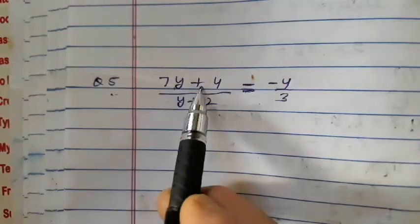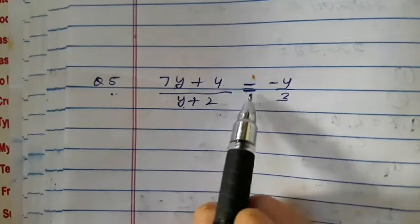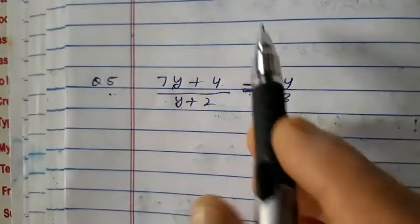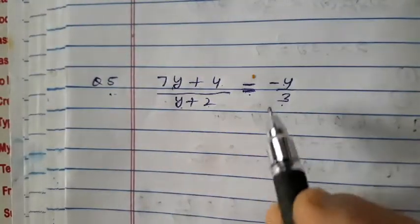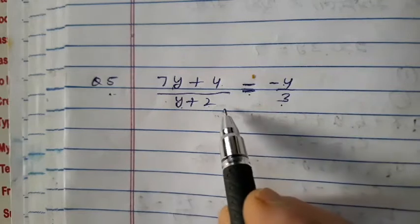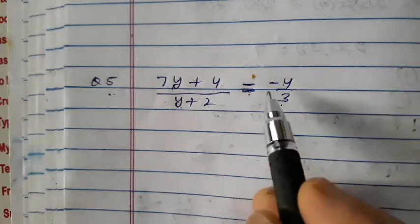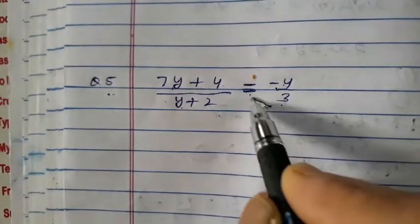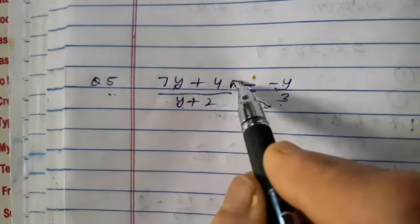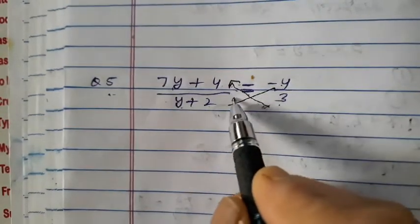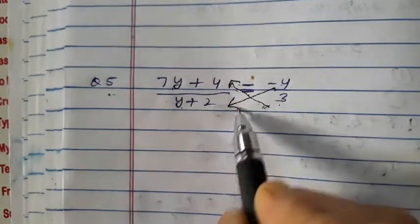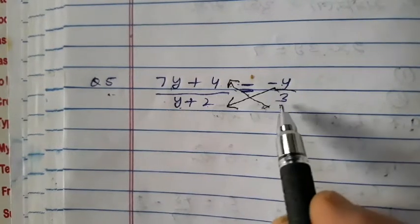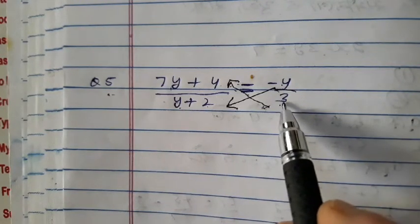Now question number 5: (7y + 4) / (y + 2) = −4/3. Like question number 4, we will cross multiply. Minus 3 is multiplied here and minus 4 is multiplied by this expression. This is called cross multiplication.